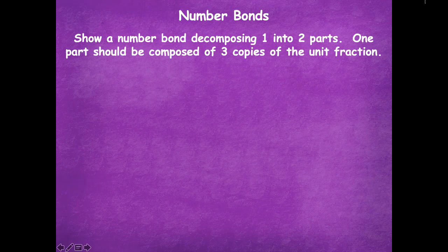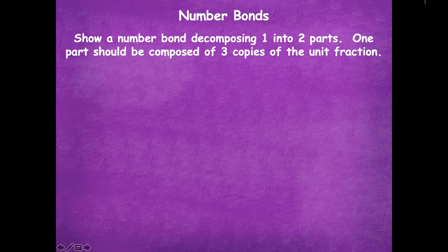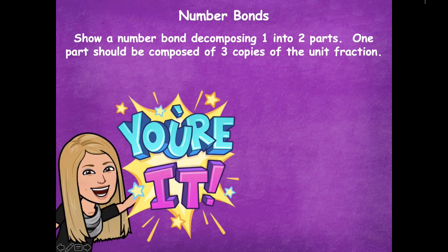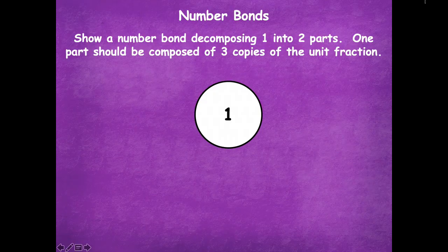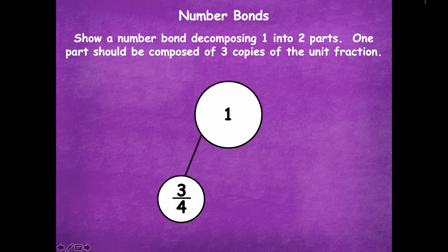Now show a number bond decomposing one into two parts. One part should be composed of three copies of the unit fraction. Remember last time with whole numbers — the bond for four was three and one, because three was three copies of one. This time, make three copies of the unit fraction one-fourth. That's one part, and you have to find the other part. Pause the video, draw your number bond, and click play when you're ready. Here I have one as the whole. Three copies of one-fourth is three-fourths. One-fourth, two-fourths, three-fourths. The other part of the number bond has to be one-fourth to make one whole.